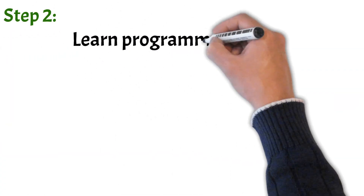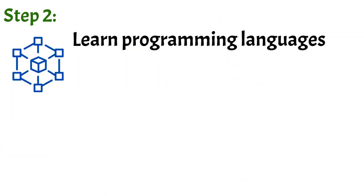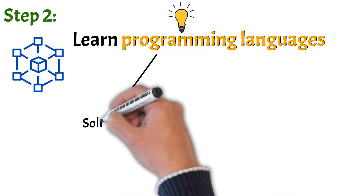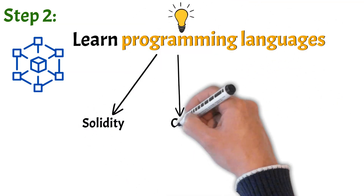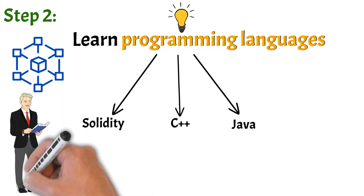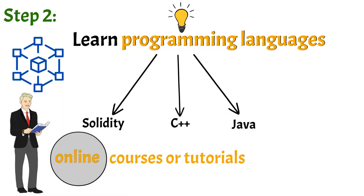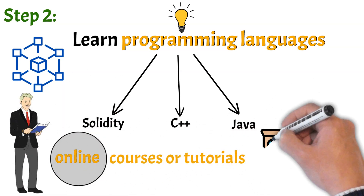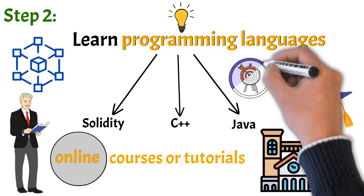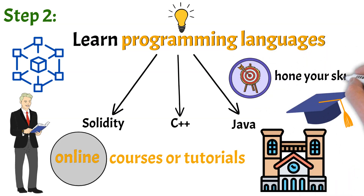Step 2: Learn programming languages. Blockchain development requires knowledge of programming languages such as Solidity, C++, and Java. You can start by learning these languages online through online courses or tutorials, or by taking classes at a local college or university. Practice developing simple applications on different blockchain platforms to hone your skills.